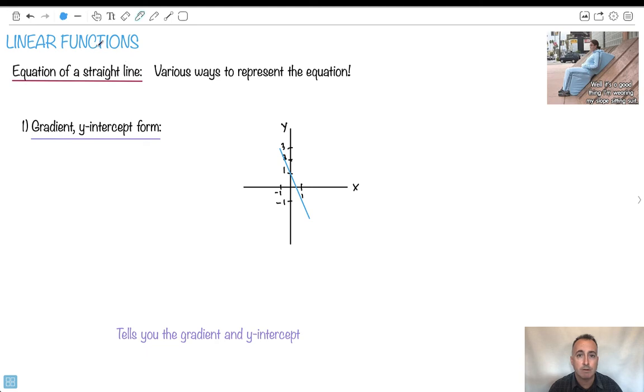I'm going to be showing you linear functions. Now the key thing with linear is this word line. So these are straight lines. That's what these are going to be. So we're going to be talking about different ways of representing a straight line graph.